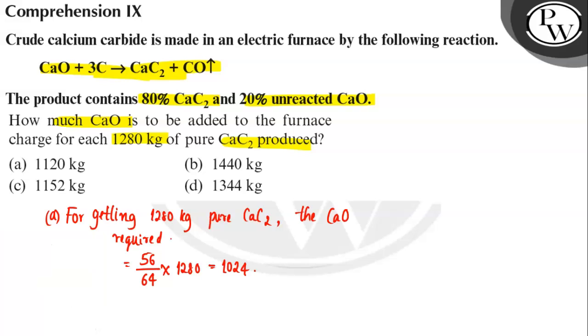This is the amount of CaO present. The free CaO present will be equal to the percentage, which is 20 percent, right? 20 multiplied by 1280 divided by 80. So if we calculate this, we will get 320 kg.